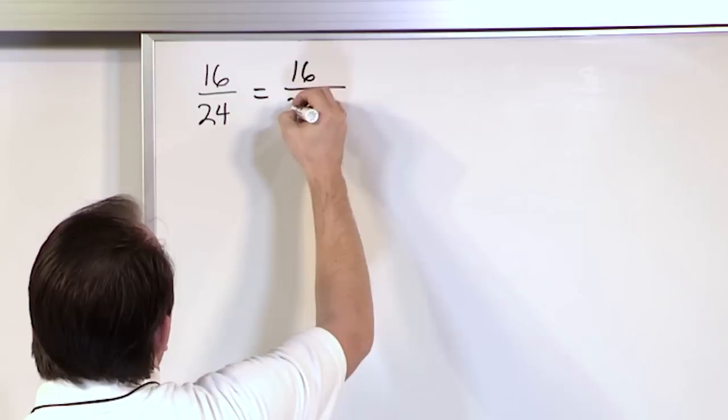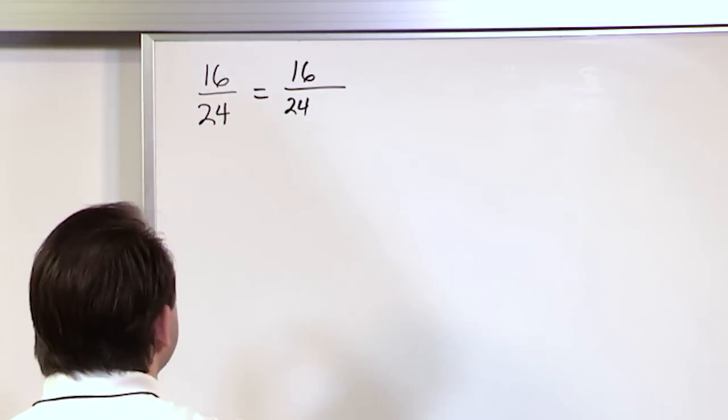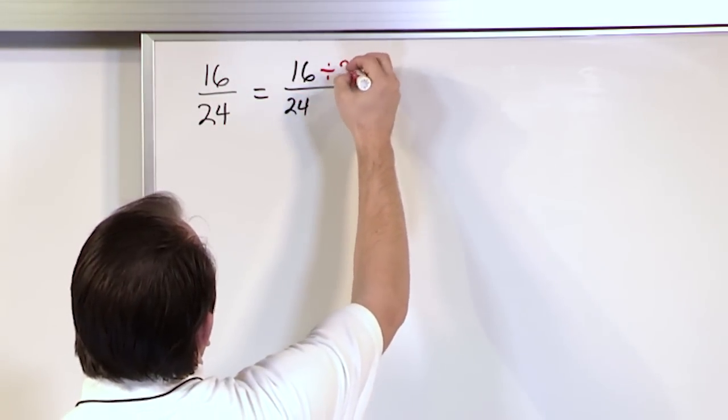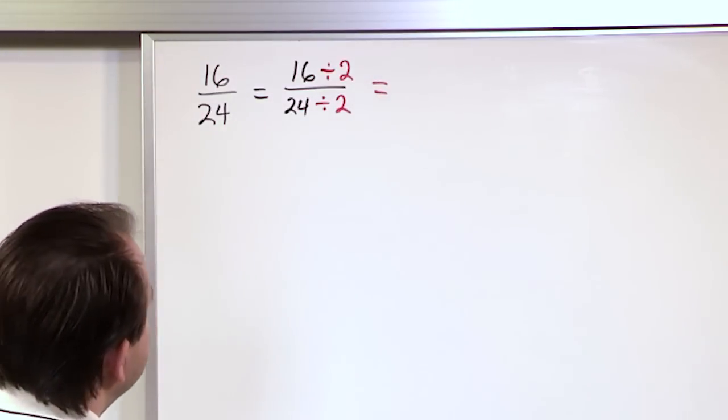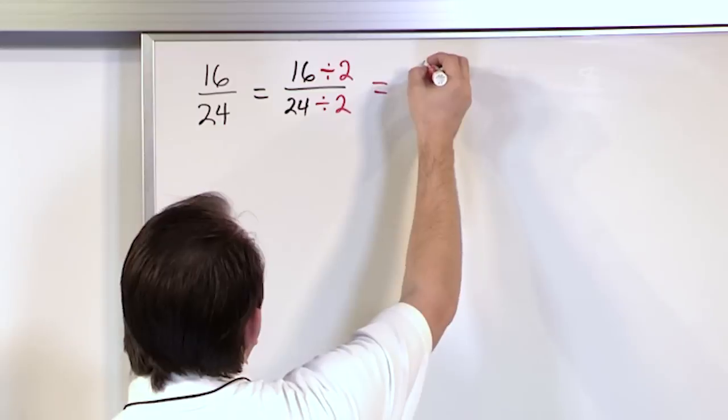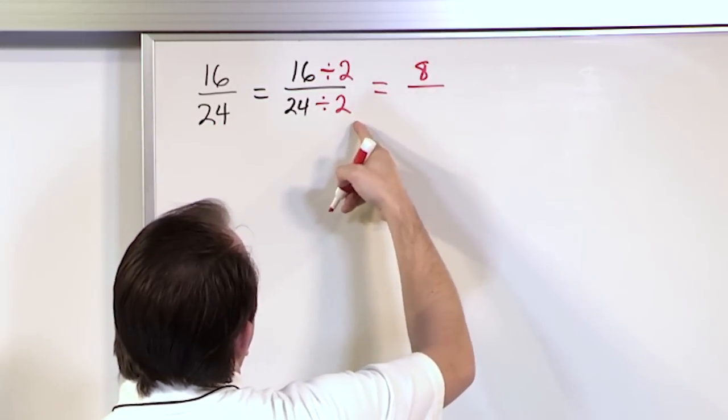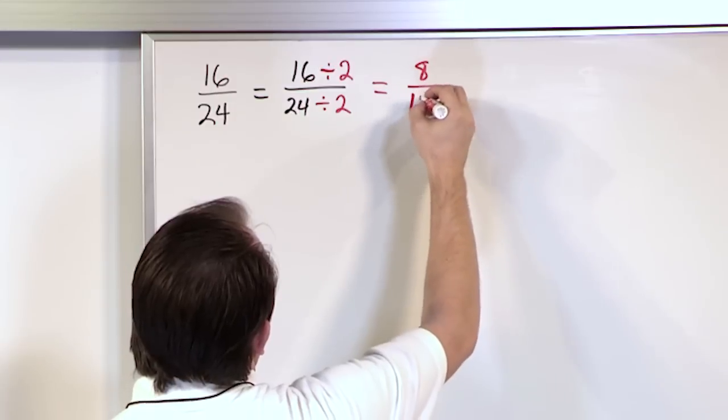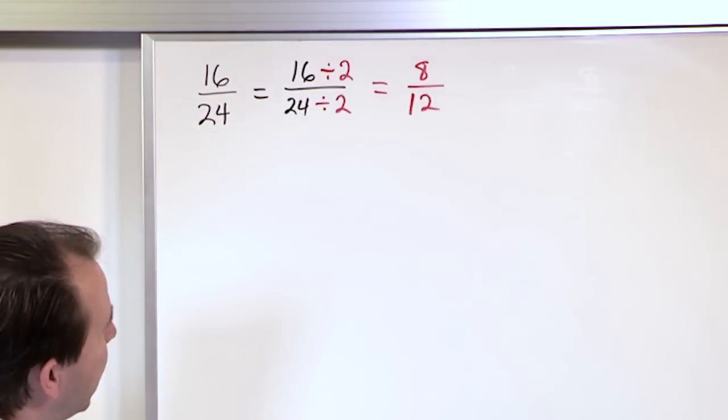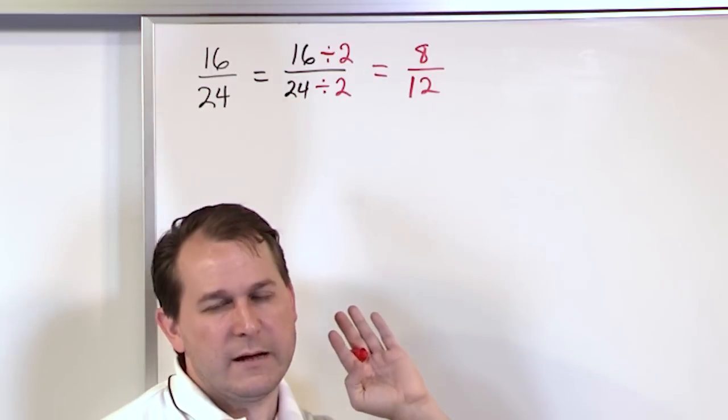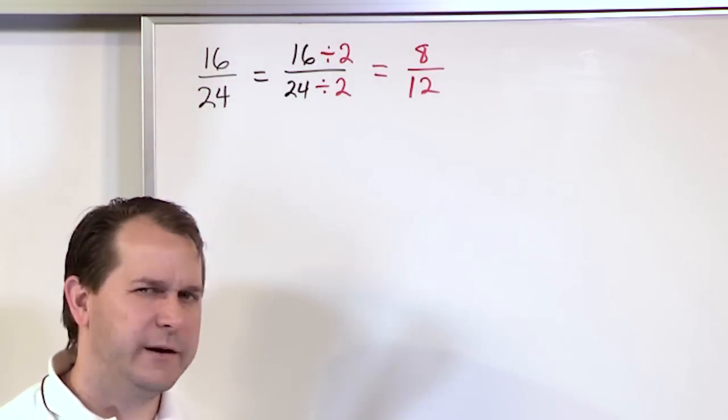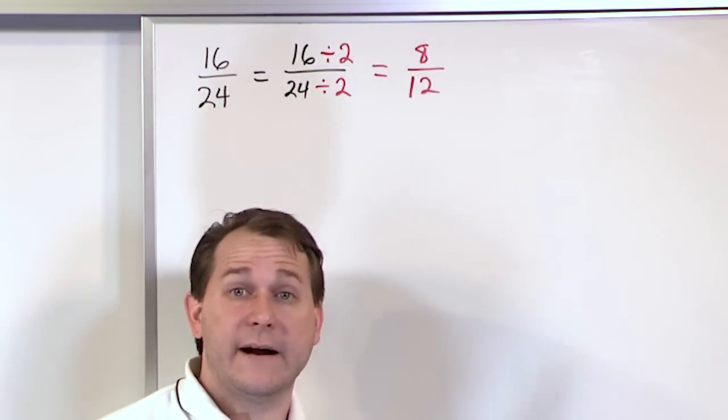So let's try to do that. 16 24ths. Let's divide the top and the bottom by 2 like this. And what am I going to get? 16 divided by 2 is going to give me 8. 24 divided by 2 is going to give me 12. So I think I'm done but then I always have to go and check. Is this fully simplified still? I look at 8 twelfths and I can tell right away I can divide again by 2.